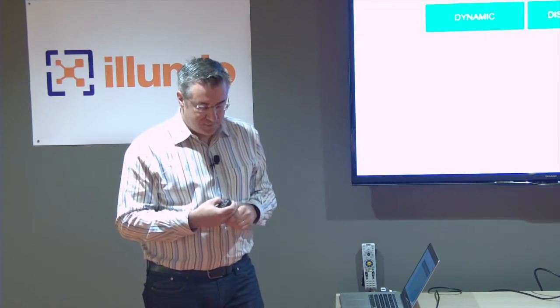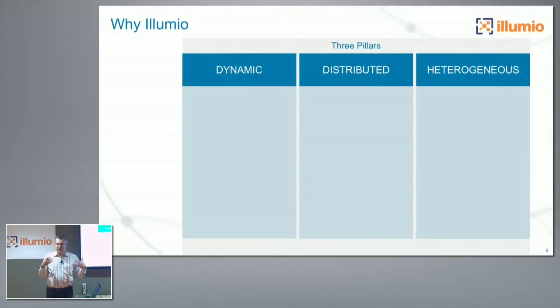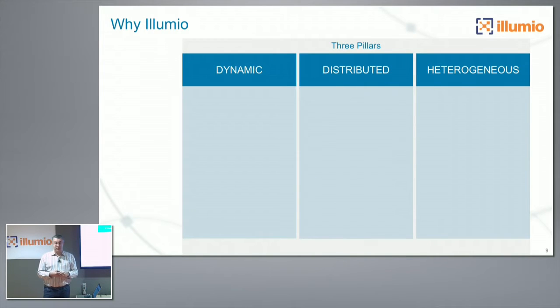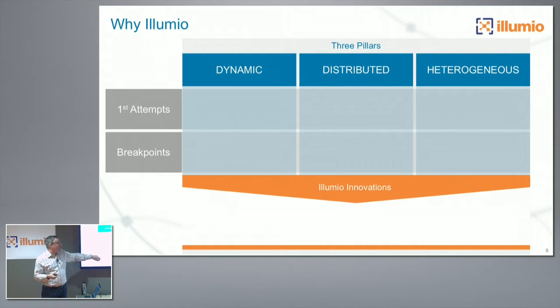I want to talk about why this is happening — why Illumio needed to be built. In my opinion, there were three trends happening in data centers. One: data centers were becoming more dynamic, more distributed, and more heterogeneous. We had to rethink what security needed to be as data centers followed these trends. I want to talk about some of the first attempts to address those trends, what I believe were some of the break points, and then what the security solution had to be.